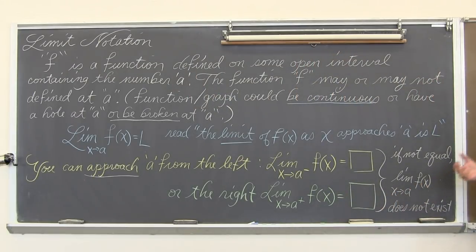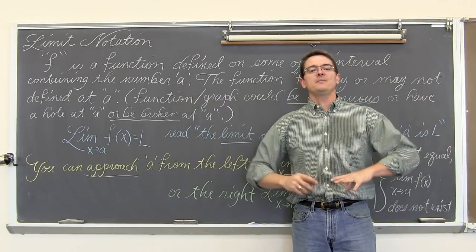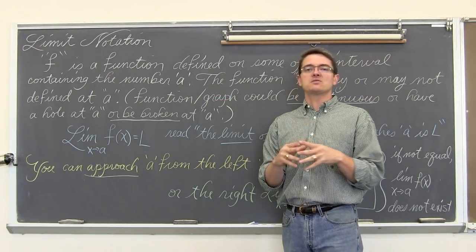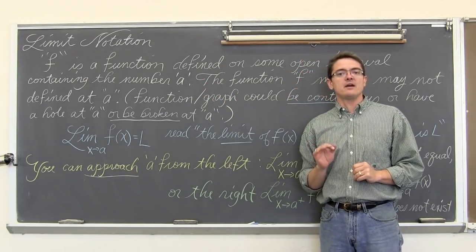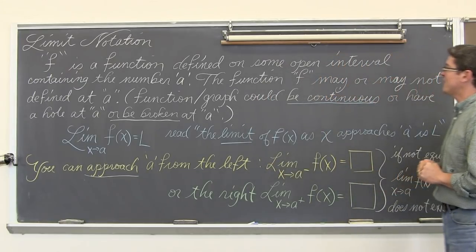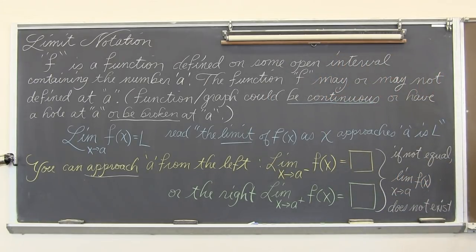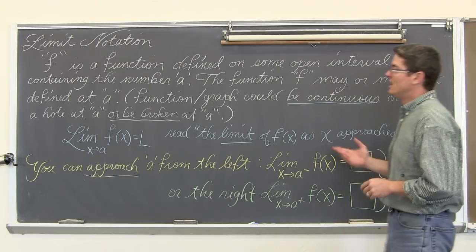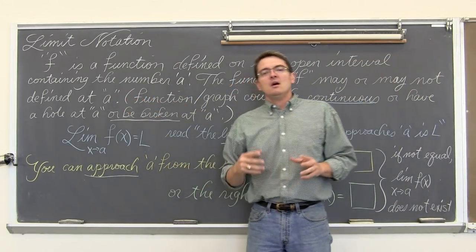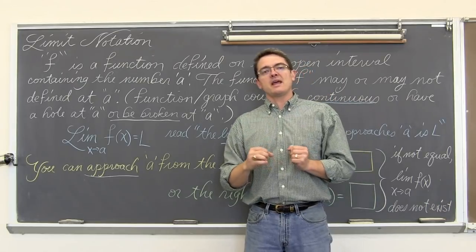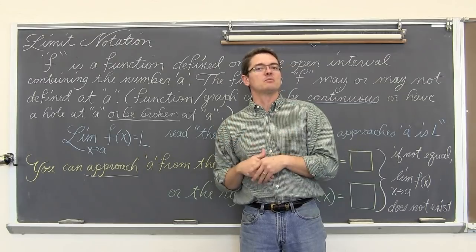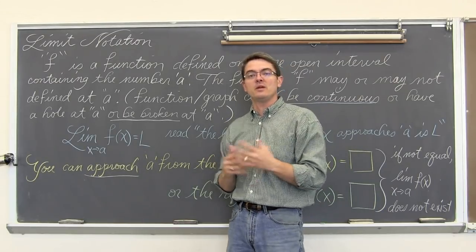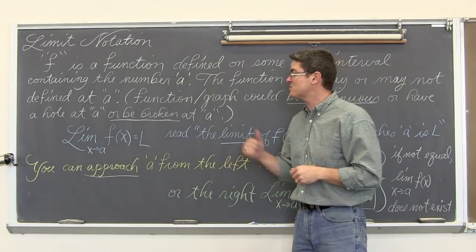F is a function defined on some open interval containing the number a. We are going to be allowing our x values to approach a particular value a, and the limit is going to be the y value that the graph approaches. The function f may or may not be defined at a. At the value of a, we may have a hole where the graph approaches and is undefined at that hole, but it is approaching the same point on both sides, and thus we will still be able to find the limit. And sometimes we won't be able to.